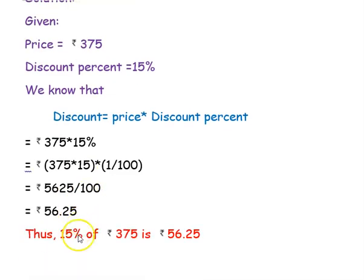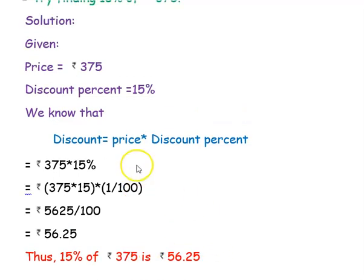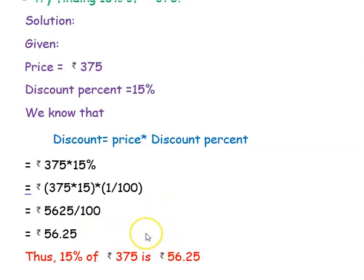You can also do this by splitting the discount percent: find 10 percent first, then half of that for 5 percent, and add both amounts. You can do it either way. Hope you have understood how to estimate the discount amounts. Thank you for watching the video.